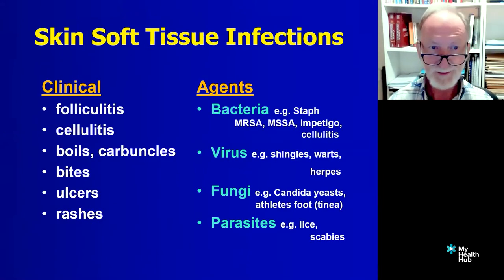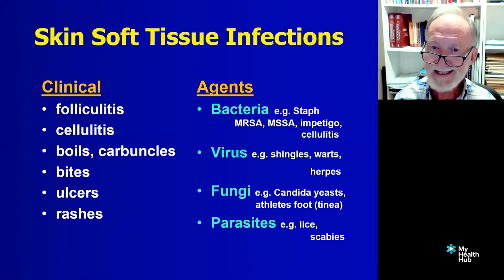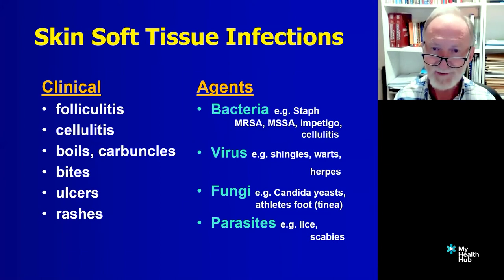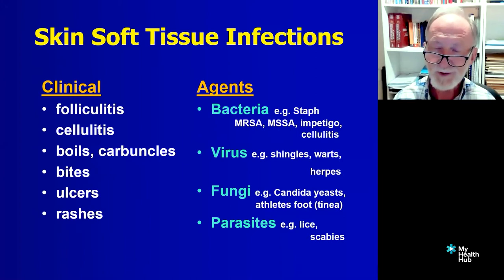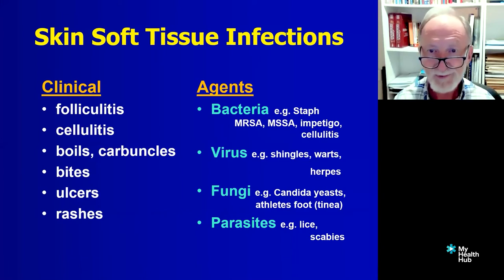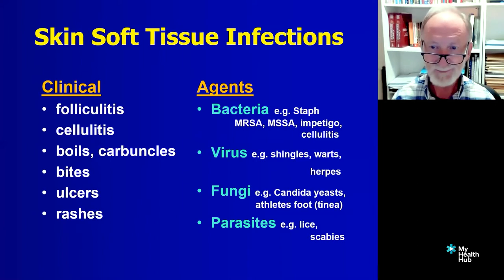Clinical categories include folliculitis, cellulitis, boils, bites, ulcers, and rashes. For the actual causes, maybe bacteria — Staph aureus, MRSA (methicillin-resistant Staph aureus), and methicillin-susceptible Staph aureus. On average, they are both just as aggressive — MRSA is no more aggressive on average than fully susceptible Staph aureus. We tend to see it more in chronic infections because people have been on more and more antibiotics and selected for resistance. Sometimes we can have an outbreak of boils with fully susceptible Staph aureus, and sometimes with MRSA. Impetigo, cellulitis, virus can be shingles, warts, herpes, etc., which includes shingles. Fungi: Candida yeast, athlete's foot, tinea. And the parasites: lice, scabies, etc.